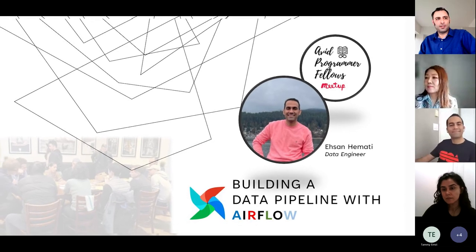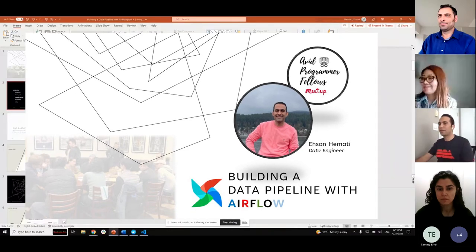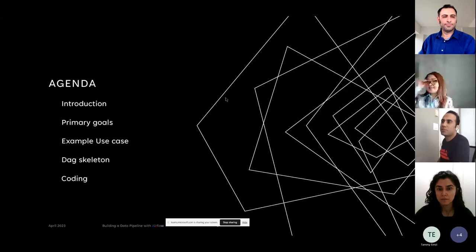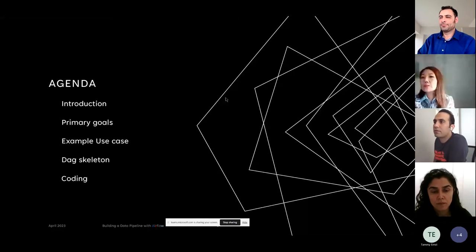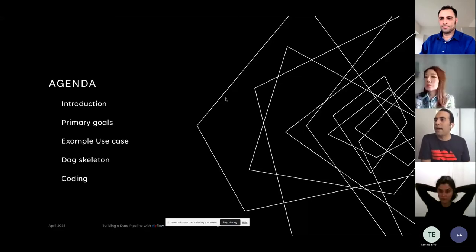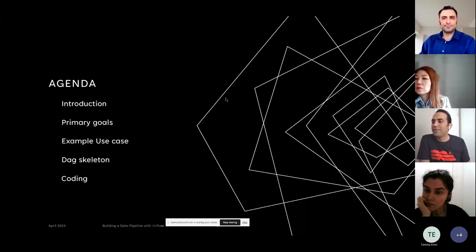Let's start with the basics. Can you explain what Apache Airflow is and what problem it solves? So here's the agenda: I'm going to start with an introduction of what Airflow is, then explain the primary goals and benefits of Airflow, then give an example use case of Airflow at EA, and then talk about the DAG skeleton and dig into coding — how we can create a new DAG and implement a new task in Airflow.